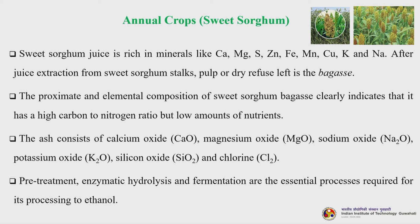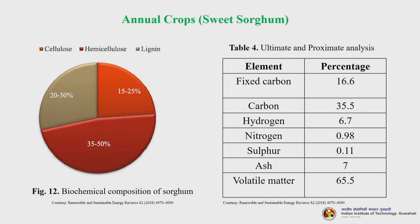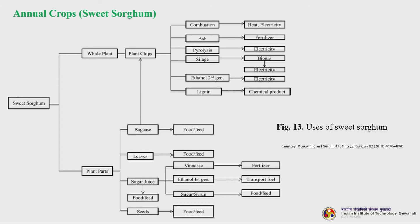The proximate and elemental composition of sweet sorghum bagasse indicates a high carbon-to-nitrogen ratio but low nutrient amounts. The ash consists of calcium oxide, magnesium oxide, sodium oxide, potassium oxide, silicon oxide, and traces of chlorine. Pre-treatment, enzymatic hydrolysis, and fermentation are the essential processes for ethanol production. The biochemical composition shows 35 to 50 percent cellulose, 15 to 25 percent hemicellulose, and the remainder is lignin. The elemental analysis shows fixed carbon at 16.6 percent, total carbon at 35.5 percent, and volatile matter at 65.5 percent.